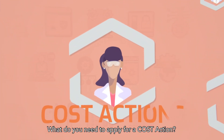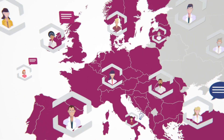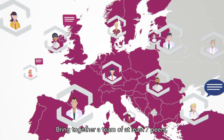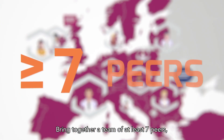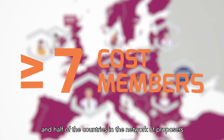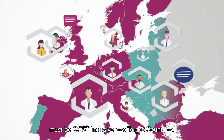So what do you need to apply for a COST Action? Bring together a team of at least seven peers from seven different COST members, and bear in mind that half of the countries in the network of proposers must be COST inclusiveness target countries.